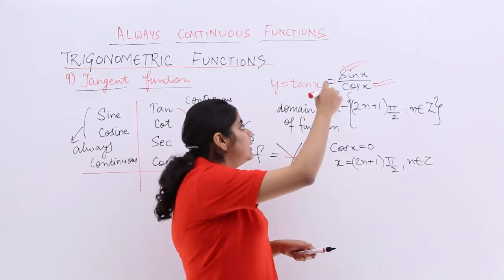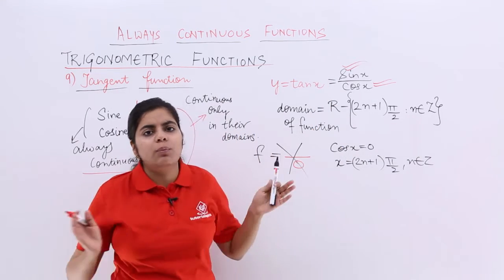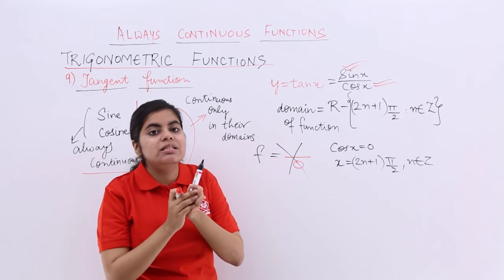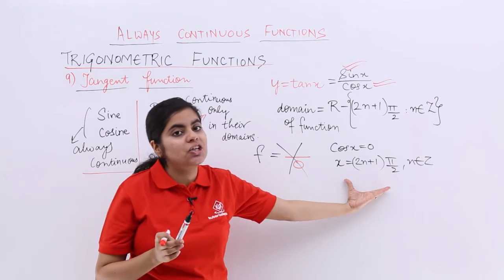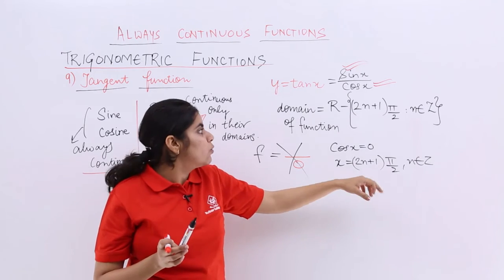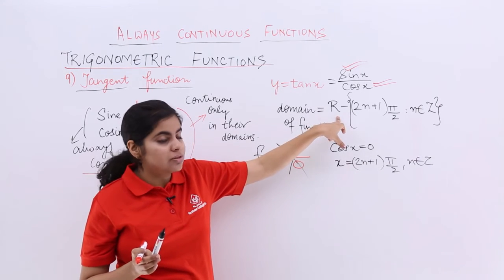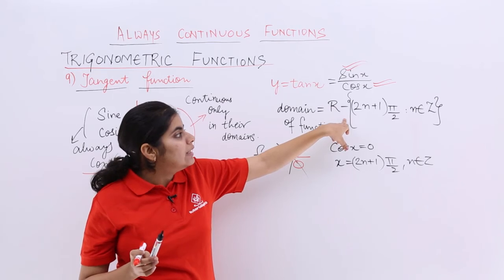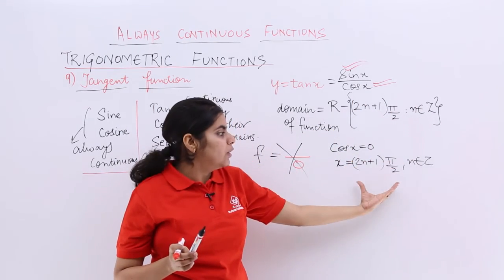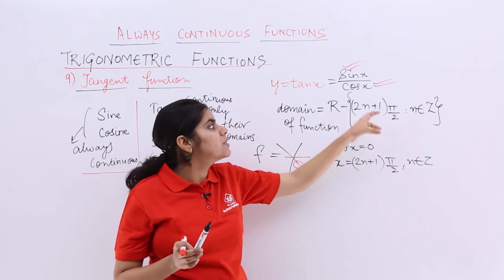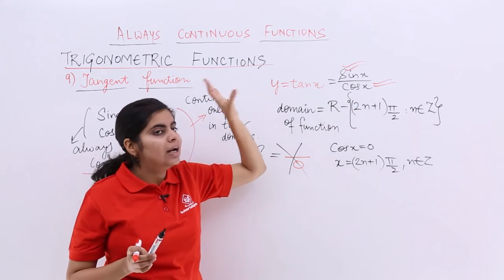So, that means tan is continuous always, except the cases when the denominator is 0 or the cases where this condition of x is there. So, I wrote here that the domain of the function is real, all real, but excluding (2n+1)π/2 because here my cos becomes 0, denominator becomes 0, tan is not defined.